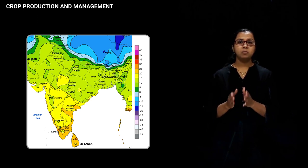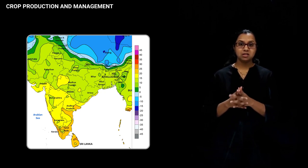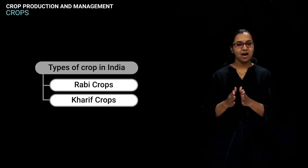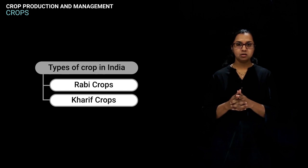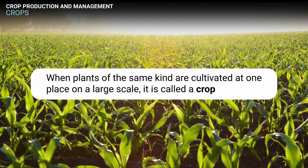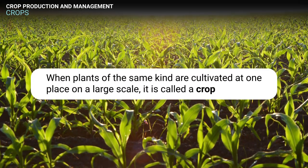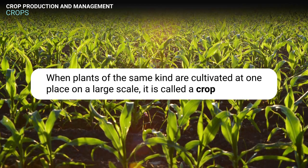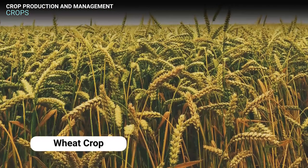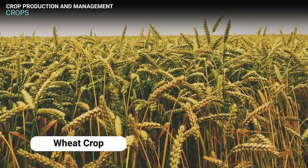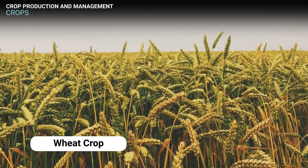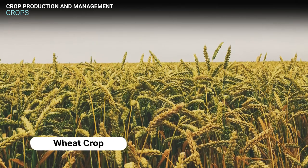In India, crops can be classified into two categories based on the season of cultivation — kharif crops and rabi crops. Before going to the details of these types of crops, let us first understand what are crops. When plants of the same kind are grown and cultivated at one place on a large scale, it is called a crop. For example, if wheat is cultivated on the same piece of land, then it is called a wheat crop.